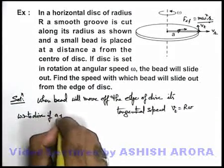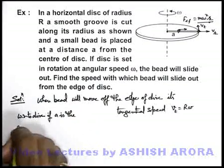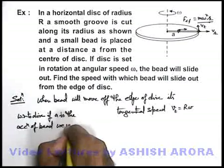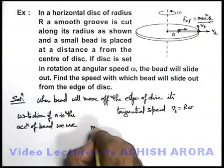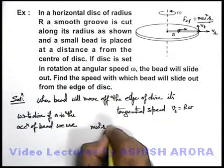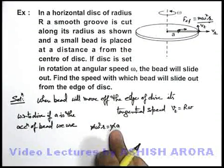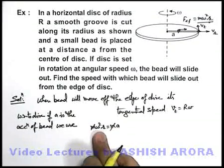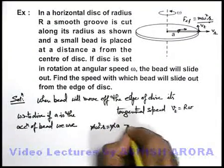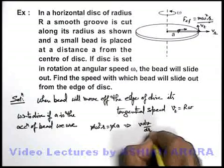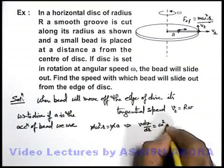If a is the acceleration of bead, we use m omega square r is equal to m times a. Here m gets cancelled out and acceleration we can write as omega square r. And as r is continuously varying we can use a as v dv by dr is equal to omega square r.